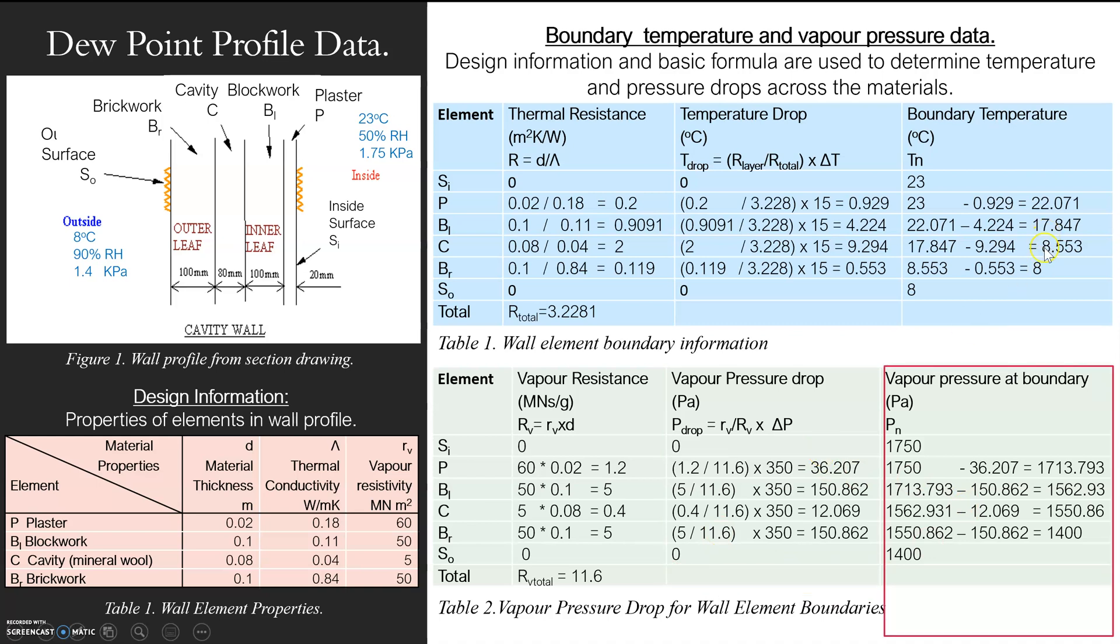And then you do exactly the same as you did for temperature down here again. You've got your inside vapor pressure, 1,750. So what am I going to do? I'm going to take away the pressure drop of my plaster. And then I've got 1,713. And I do the same. I've got my 1,713. So that's now. I've gone through my plaster. Pressure is here, right? That's my vapor pressure right now.